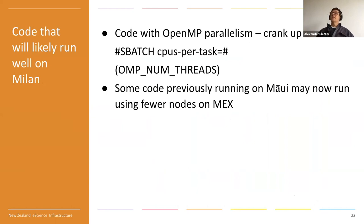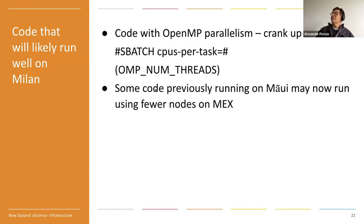Code that will likely run well on Milan includes code that uses OpenMP shared memory parallelism — you can set that with the --cpus-per-task option and may need to set OMP_NUM_THREADS. Some codes previously running on Maui could also benefit from running on MEX, particularly if your code is in the range of hundreds of cores.